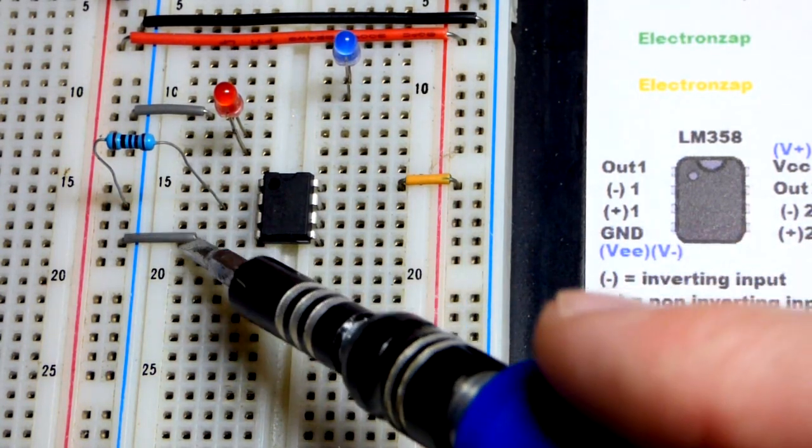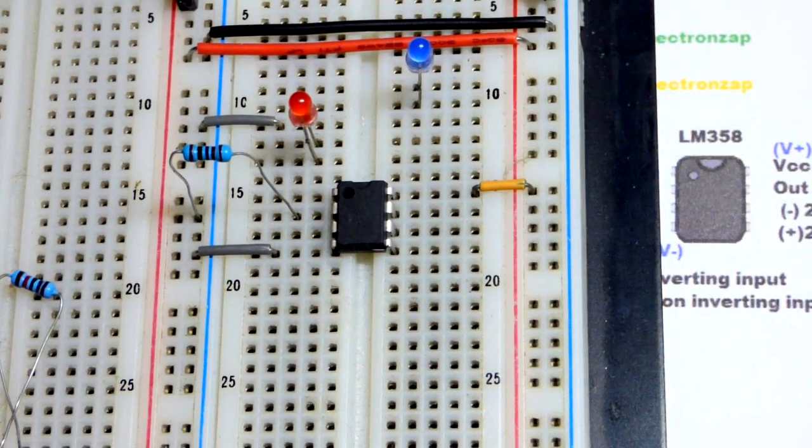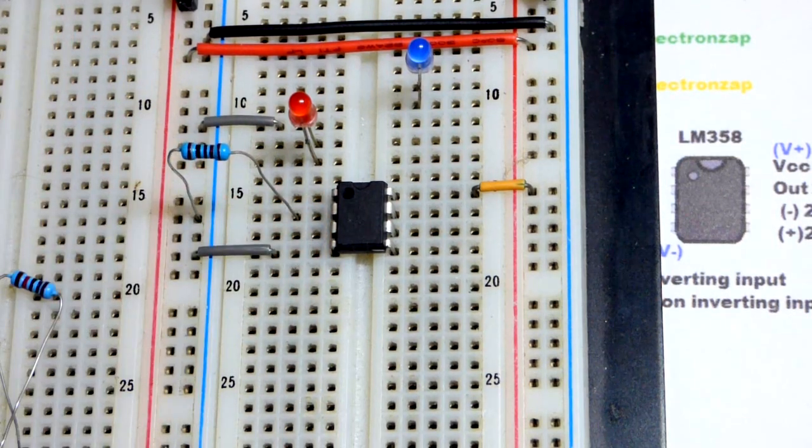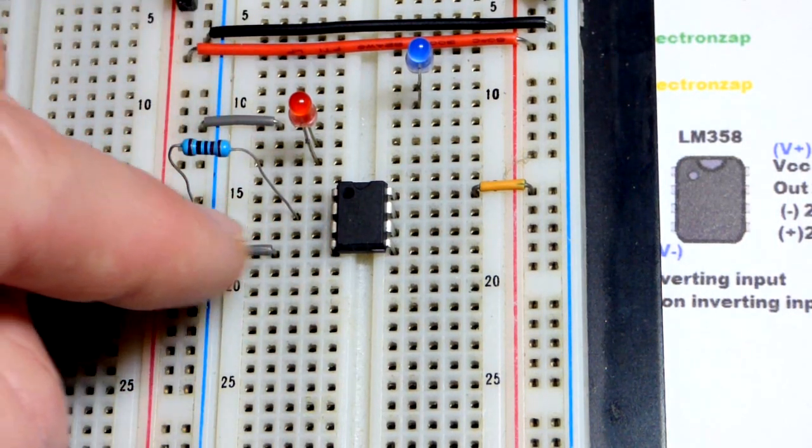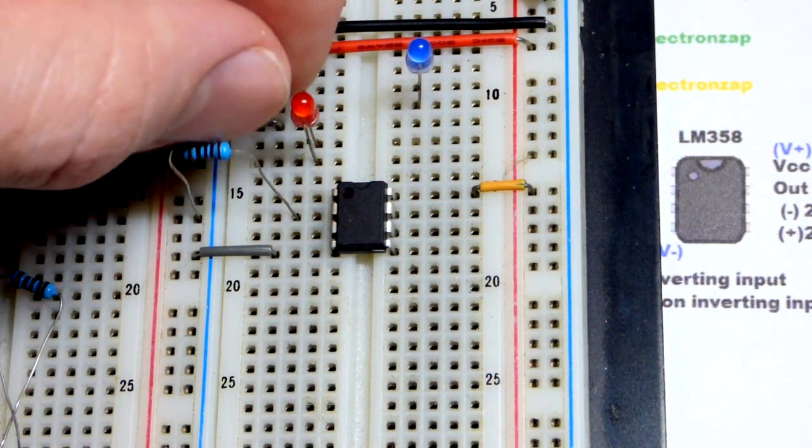We've got ground to pin 4 because it's a single supply. Now, I've got the current setting resistor, the 1 kiloohm resistor to the inverting input. And so it's going to be above the voltage divider because, as I said, the pins are opposite what we saw on the schematic.